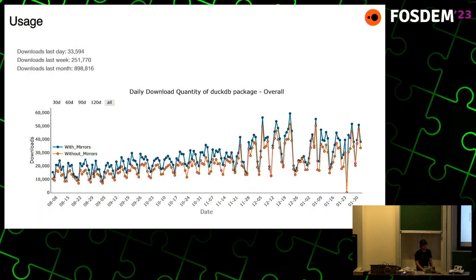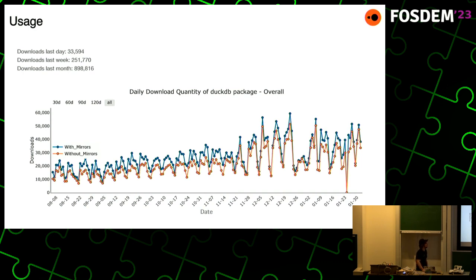Looking at our PyPI download counts, the Python library is actually our most downloaded API. We have APIs for all sorts of languages, and in the last month we had about 900,000 downloads, so there are a lot of people trying out and using DuckDB in their Python scripts.